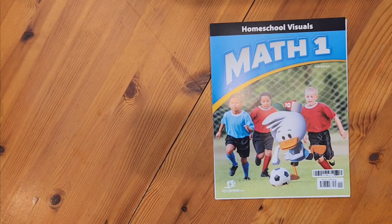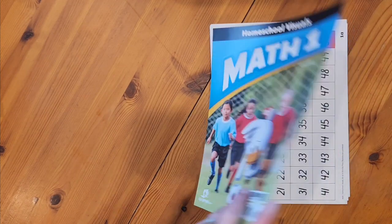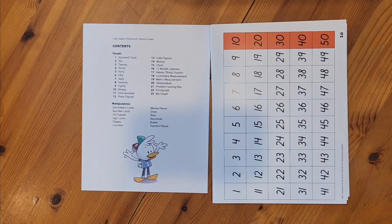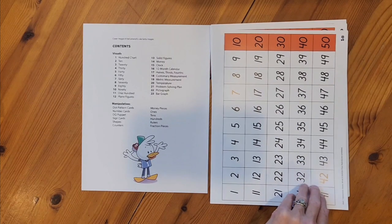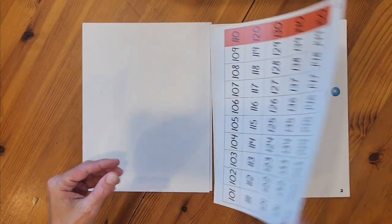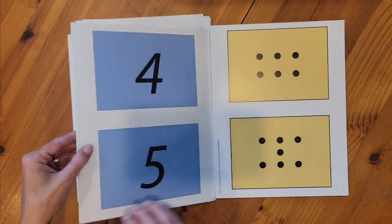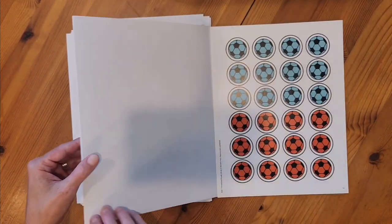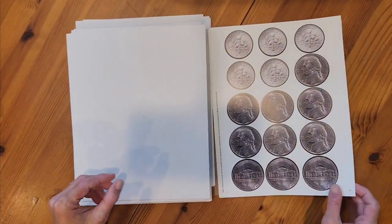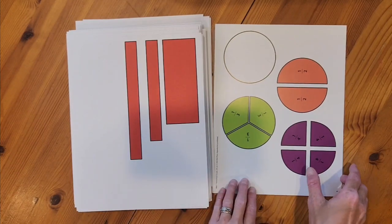Sometimes the teacher edition might ask me to use a visual to help present something in the lesson. So I'm going to come to the homeschool visual packet to find those. These are all printed on cardstock and the first page has a contents list for me. Now the teacher edition, if it wants me to use a visual, it will give me a number to help find the chart. So if it said visual 1A, I'm going to look for the 1A in the bottom right corner of the card. I've also got larger items like what the student had in their manipulative packet. And I can use these to help present the information in the lessons. So this is the homeschool visual packet.